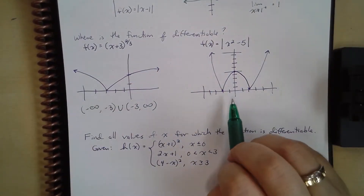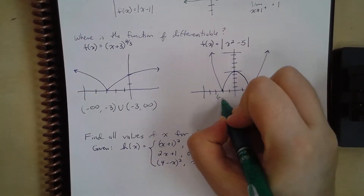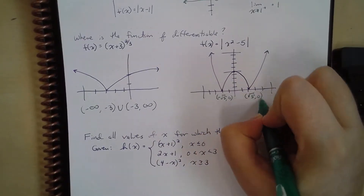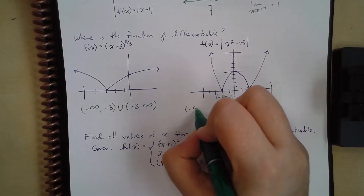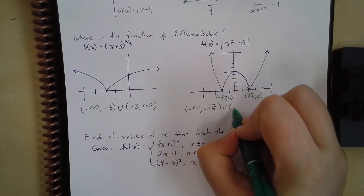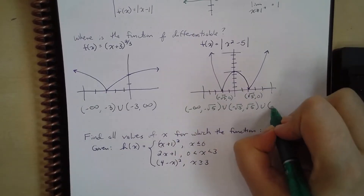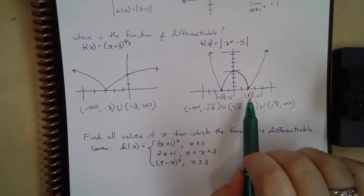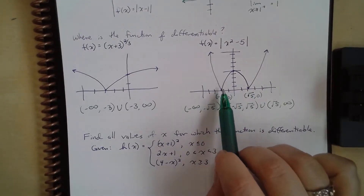Now, if we look at the next graph, this point here is negative radical 5, 0, and this point here is radical 5, 0. So where is this differentiable? We have this as differentiable in three places: from negative infinity to negative radical 5, then from negative radical 5 to radical 5, and again from radical 5 to infinity. But at negative radical 5 and radical 5, it's not differentiable because we have a sharp point there.